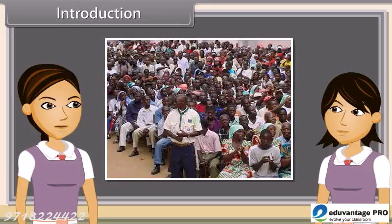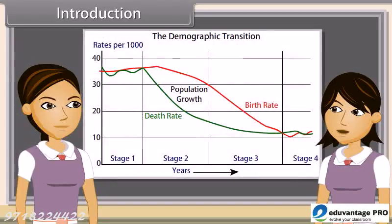Due to rapid growth in population, we observe population explosion. It is mainly due to rapid decline in death rate and increase in lifespan.